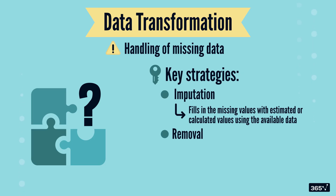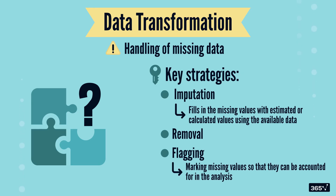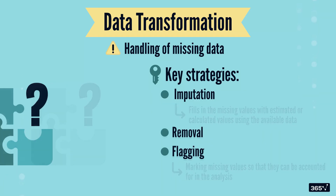Next is removal. Sometimes, if the missing data is minimal, it might be easier to simply remove those records. And the final strategy is flagging — marking missing values so that they can be accounted for in the analysis.